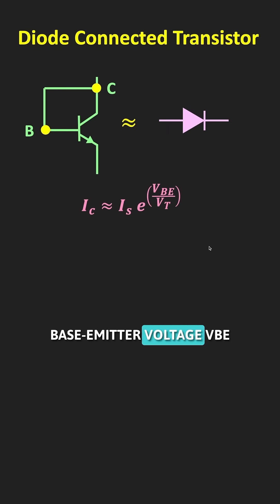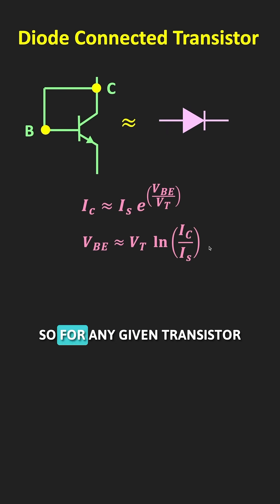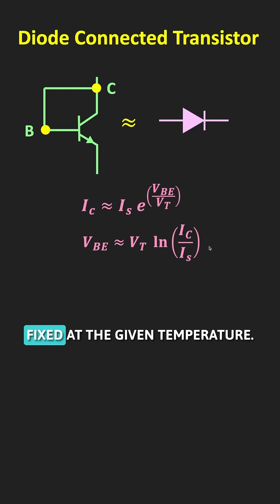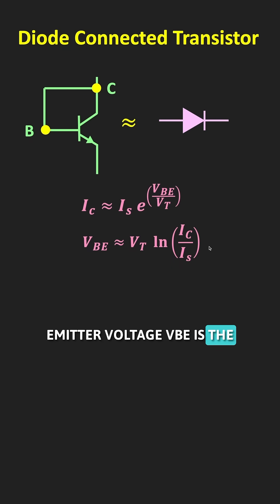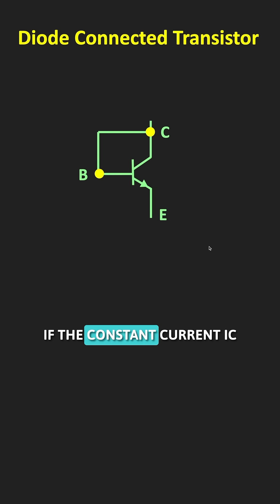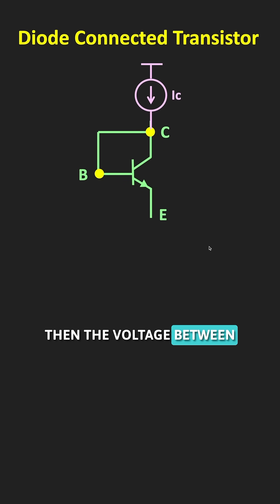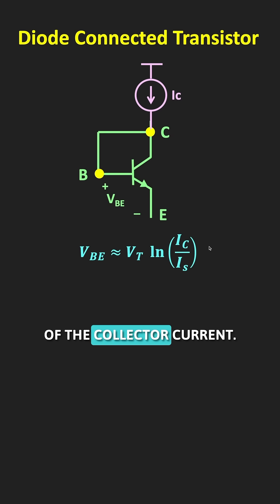From this, the base-emitter voltage VBE can be expressed accordingly. For any given transistor, the reverse saturation current Is and the thermal voltage VT are fixed at a given temperature. So we can say that VBE is a function of the collector current. In this diode-connected transistor, if a constant current IC flows through the collector terminal, then VBE is the function of that collector current.